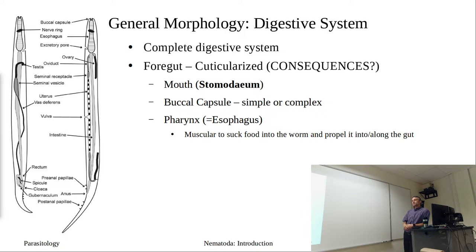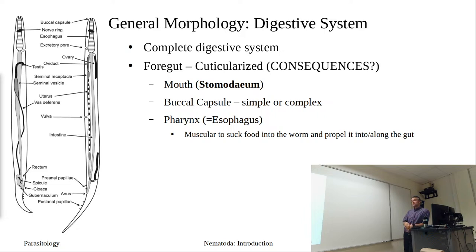Most of the questions are multiple choice — nearly all of them. There are questions where I ask what is the genus or species of a parasite — those are fill in the blank. All of the multiple choice have six options, not just four. You have 75 minutes — that's a minute and 15 seconds per question. As long as you feel comfortable looking at the images, we should do fine.